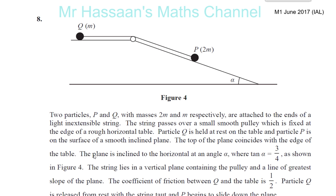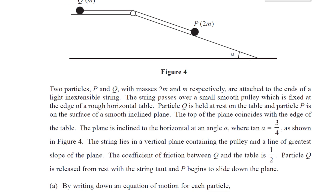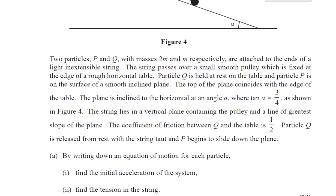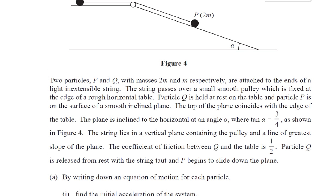As shown in figure 4, the string lies in a vertical plane containing the pulley and a line of greatest slope of the plane. The coefficient of friction between Q and the table is one half. Particle Q is released from rest with the string taut, and P begins to slide down the plane. By writing down an equation of motion for each particle, find the initial acceleration and the tension in the string.